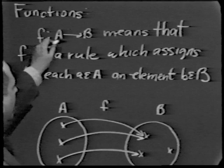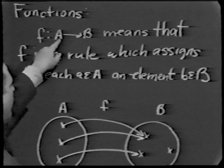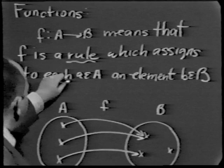Let's begin with a basic general definition of what a function is, after which we will specialize and talk about functions of a real variable for the remainder of the lecture. A function f from A to B — written this way — means that f is a rule which assigns to each element in set A an element in set B.